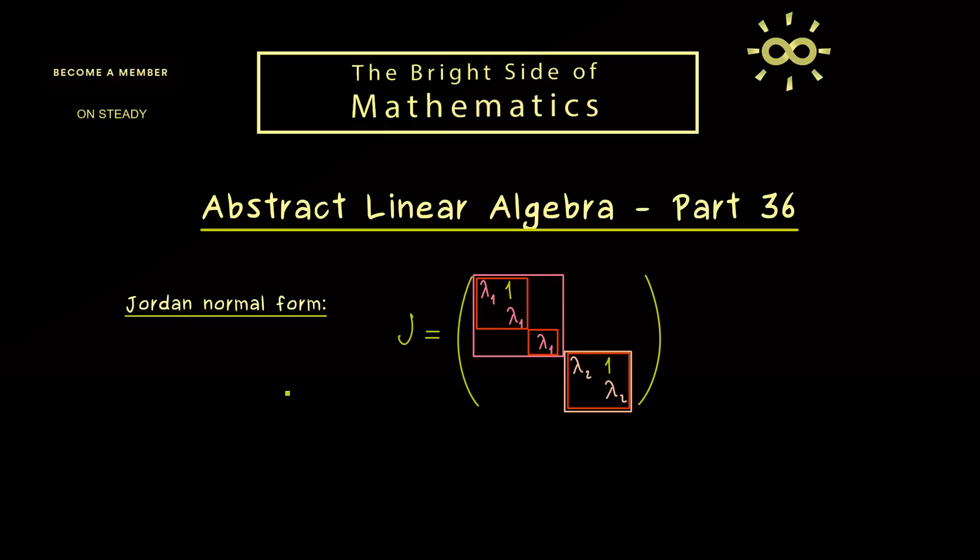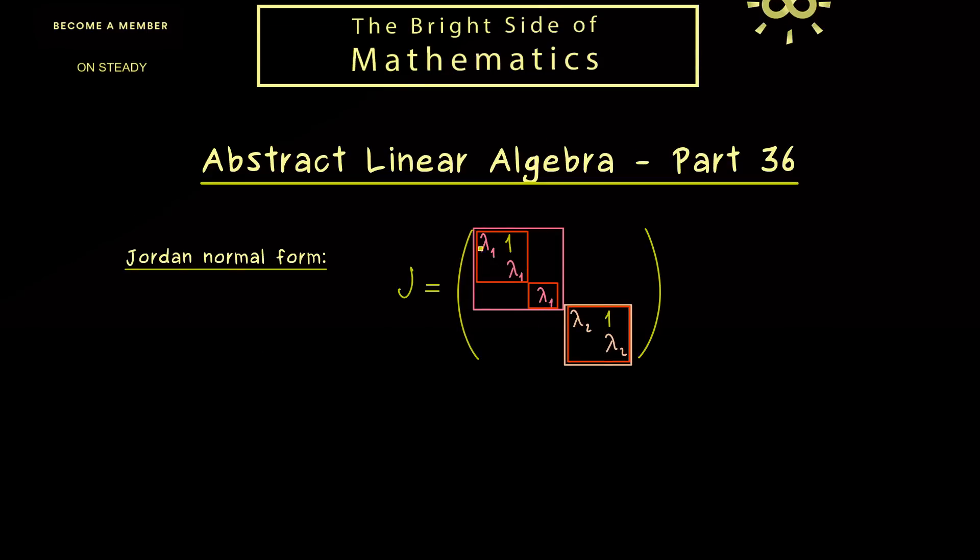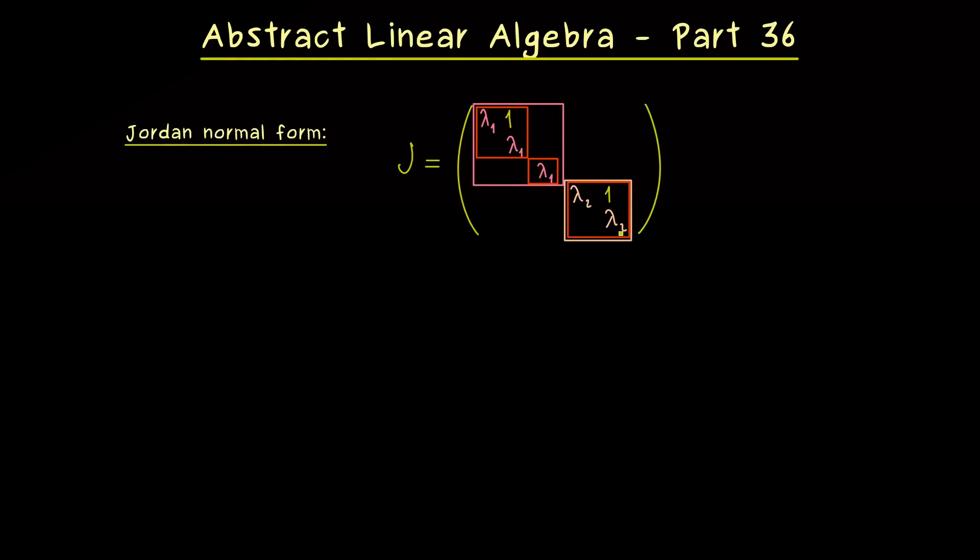And you should see in order to do that we have to talk about eigenvalues and eigenvectors. And I can tell you what we need to do is to generalize the concept of an eigenspace. Because if the ordinary eigenspaces are large enough this matrix A here would be diagonalizable. And then the Jordan Normal Form is just a diagonal matrix and for that we already have the whole theory. Therefore now everything is about an extension.